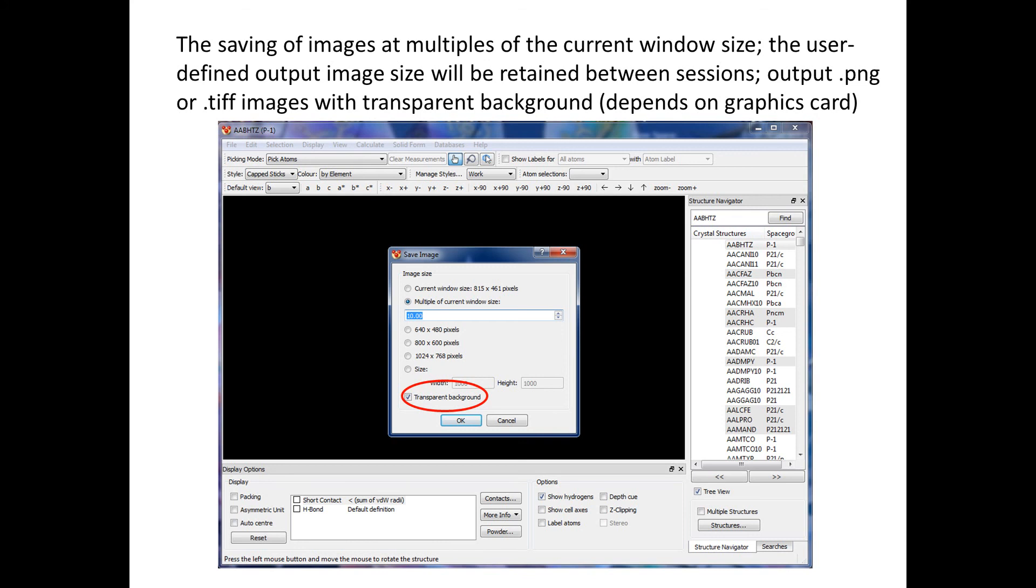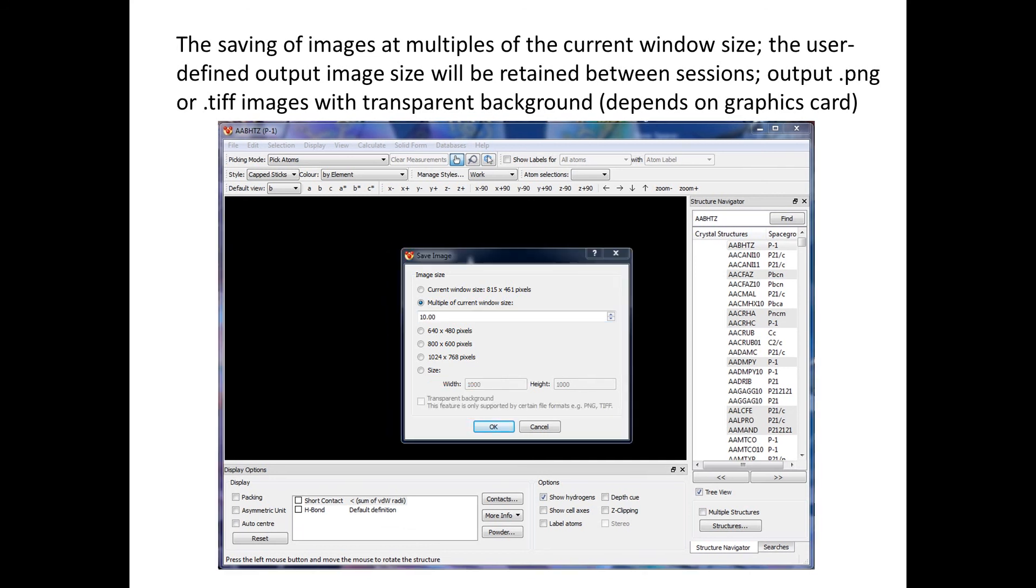Now this will depend on two things: one is the graphics card and the other is the image output format that is chosen. Only PNG and TIF images can at the moment be saved with transparent background. If you choose any other image output format or if your graphics card does not support transparent background, there will be a message telling you that the feature is not supported.